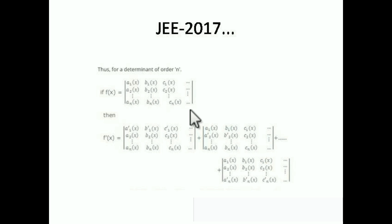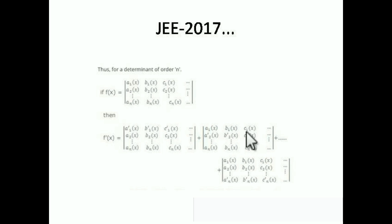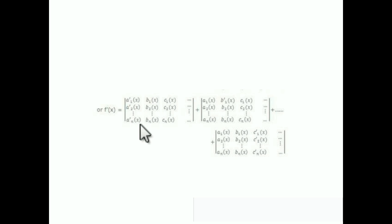Then add the differentiation of the second row with all other rows constant, and so on up to the differentiation of the last row — an'(x), bn'(x), cn'(x) — with all other rows constant. Similarly, by the column: differentiate each column one at a time keeping all other columns steady, summing all terms. That is the differentiation of a determinant.